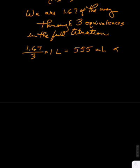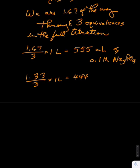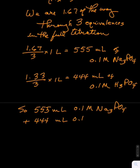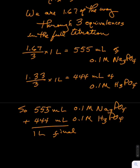This would correspond to combining 1.67 over 3 times 1 liter equals 555 milliliters of 0.1 molar sodium 3 PO4, with 1.33 over 3 times 1 liter equals 444 milliliters of 0.1 molar H3 PO4. So 1 liter of this buffer can be prepared by mixing 555 milliliters of 0.1 molar Na3 PO4 and 444 milliliters of 0.1 molar H3 PO4 to make the desired buffer.